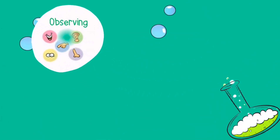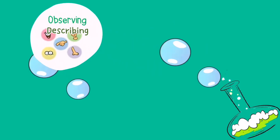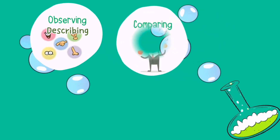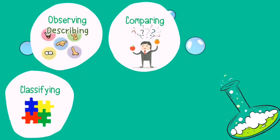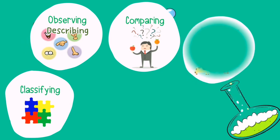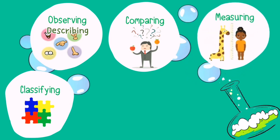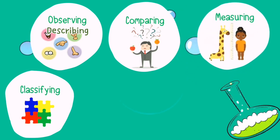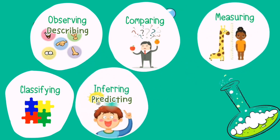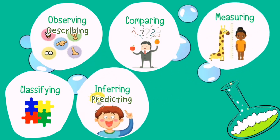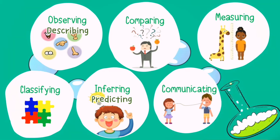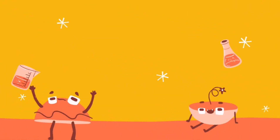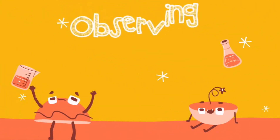First, we have observing and describing. Second is comparing. Third is classifying. Fourth is measuring. Fifth are inferring and predicting. And then the last one is communicating. Now let us know the science process skills one at a time.